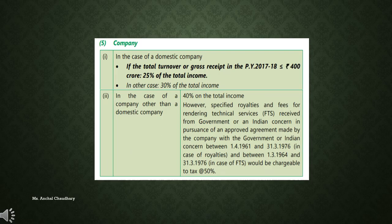In case of a company, the tax rates are as follows. When the company is a domestic company: if the total turnover or gross receipt is equal to or less than ₹400 crore, the tax rate is 25% of total income; when the total turnover or gross receipt exceeds ₹400 crore, the tax rate is 30% of total income. In case of a company other than a domestic company, 40% of total income will be levied as tax.